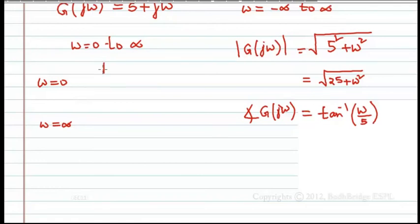When omega equal to 0, magnitude is 5 and angle is 0. And omega equal to infinity, magnitude is infinity. And what is the angle? Tan inverse infinity by 5, tan inverse infinity, that comes at pi by 2.